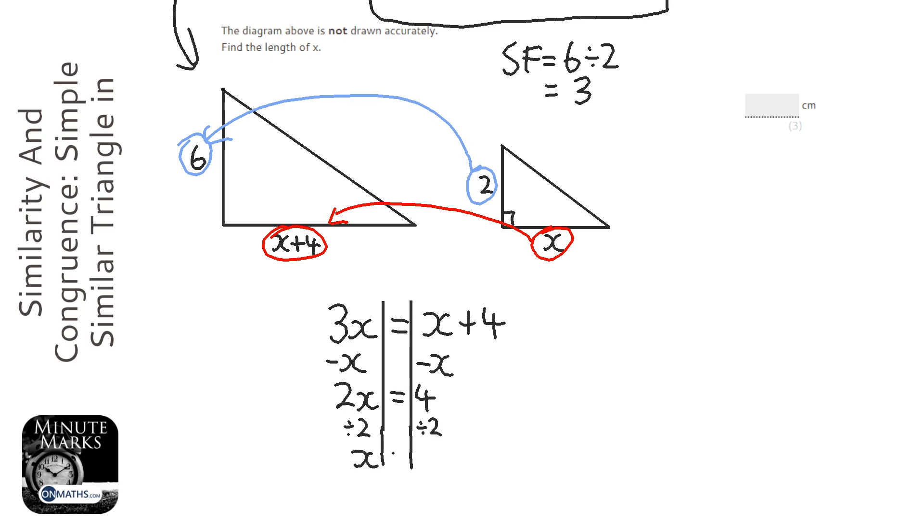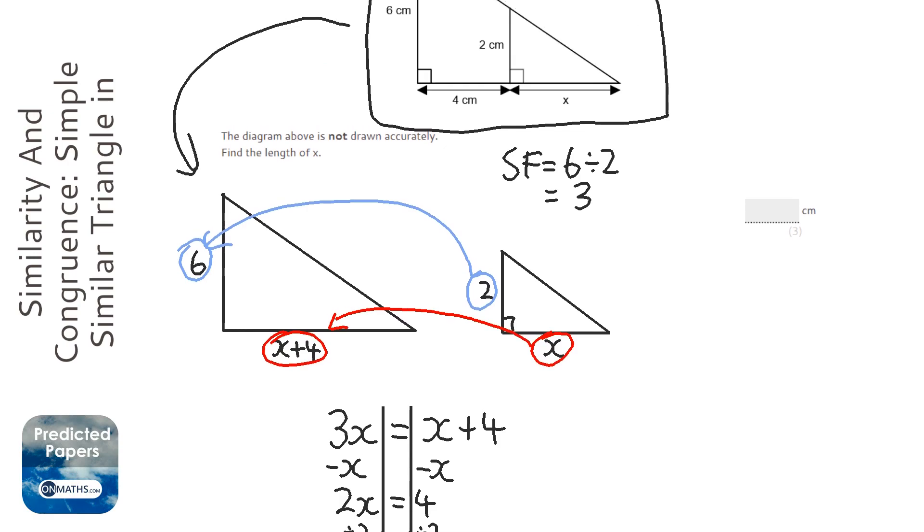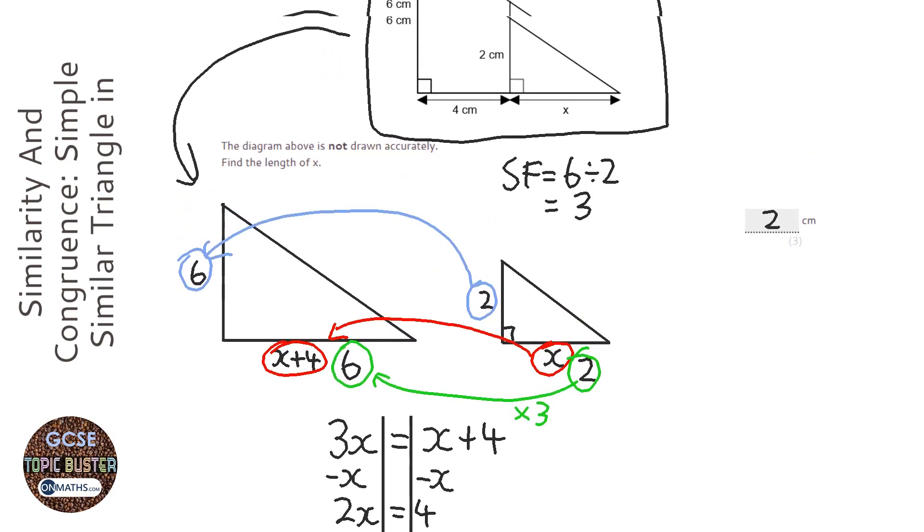Now let's see if that works. So if x was 2, this length here would be 2 and this length here would be 6, and we know that 2 times 3 is 6, so we know it's the right answer. So the length of x is 2.